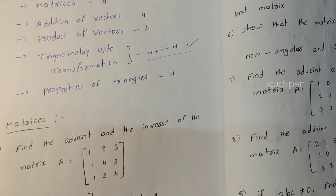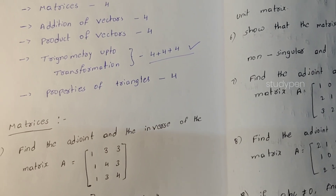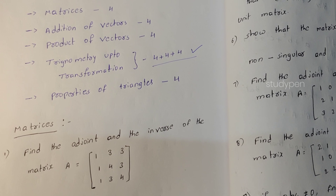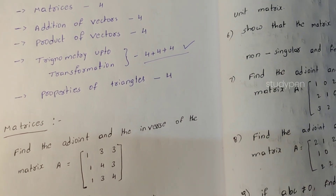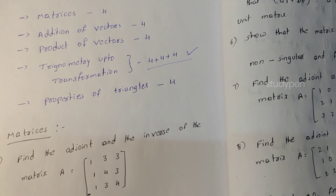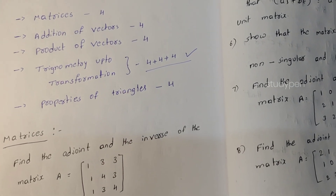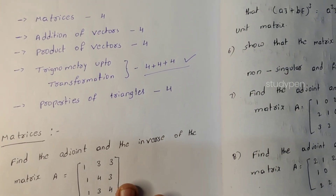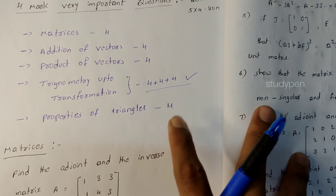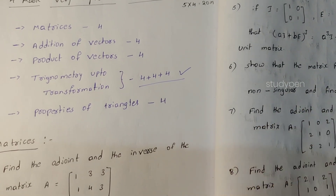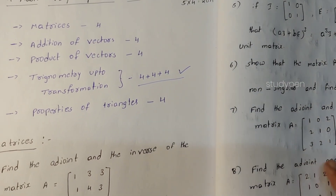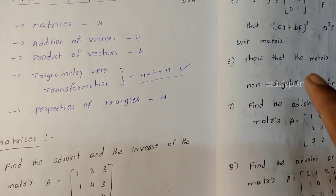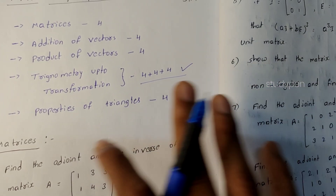These are all the properties of triangles — mainly 4-mark questions. You can find the 4-mark questions via the description link below. If you are interested in trigonometry, that has already been shared two times. Check my earlier video for that part. All these questions are listed between the descriptions. In the comment section, if you have a question, you can type it.